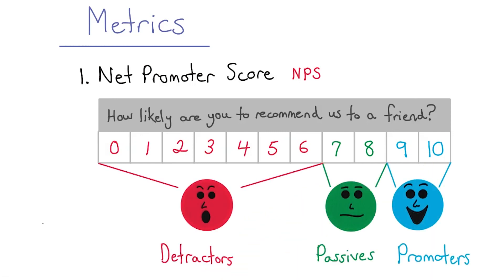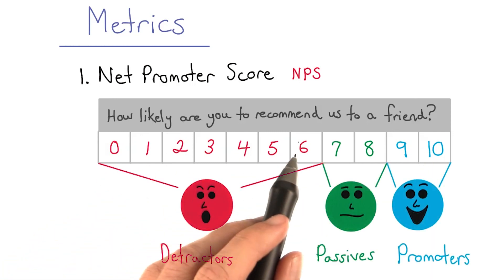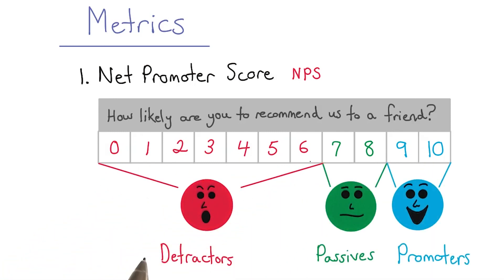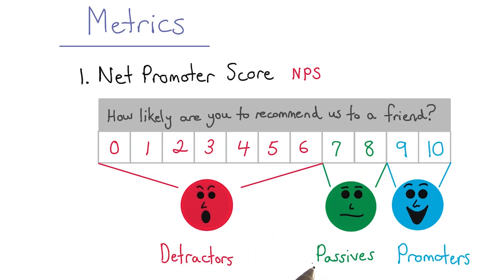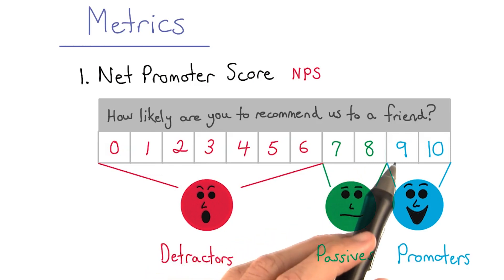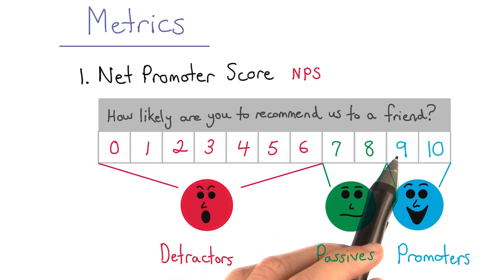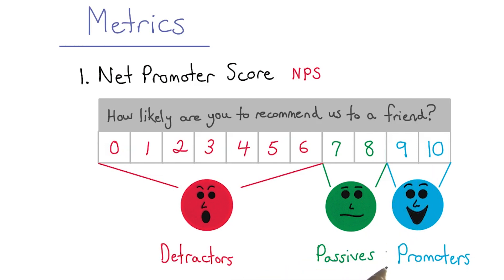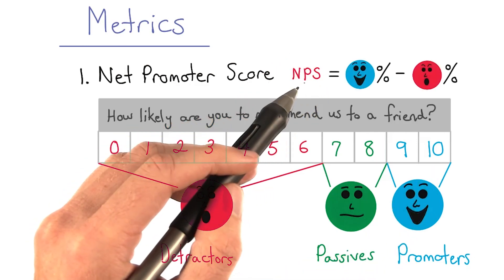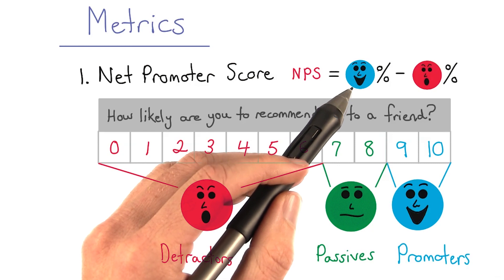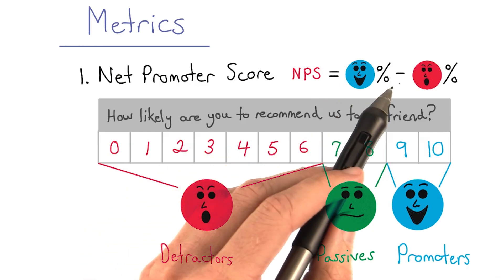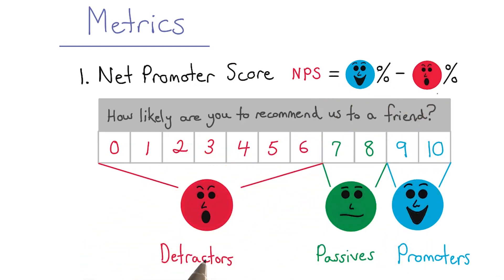Customers who respond with a number between 0 and 6 are called your detractors. Customers who score 7 or 8 are your passives, and anyone ranking with a 9 or 10 is a promoter. To actually calculate your NPS, you take the percent of promoters and then subtract out the percent of detractors.